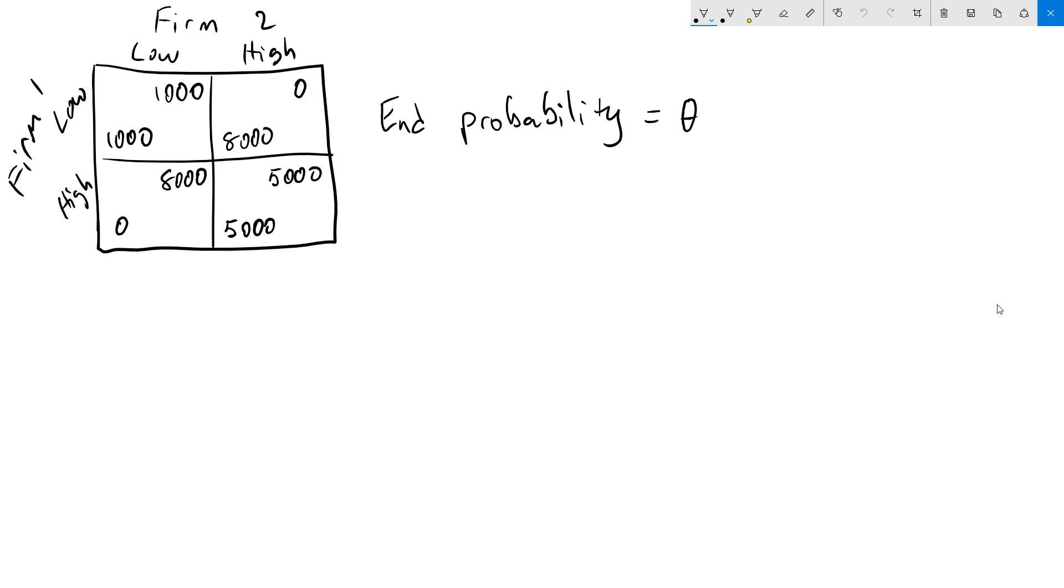If the game is repeated, we can use the Grim Trigger strategies to potentially support a cooperative outcome between the two firms. If both firms are playing the Grim Trigger strategy, then they're going to start out by setting the high price, and they're going to continue setting the high price as long as the other player also did. If both play Grim Trigger, then they'll continue to do that until the game ends.